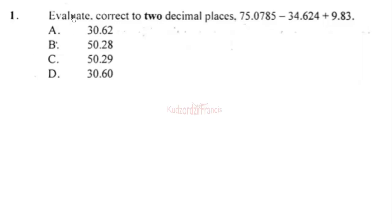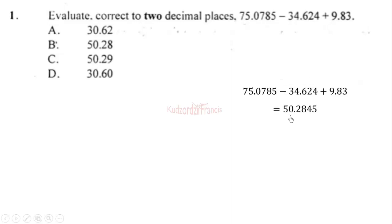2020 Core Mathematics Paper, Paper One. Evaluate correct to two decimal places: 75.0785 minus 34.625 plus 9.83. Adding these numbers we obtain 50.2845. Starting from the first number after the decimal point — one, two — then we consider the next digit which is less than five, so we don't add anything. That gives us 50.28, so the correct answer is 50.28.